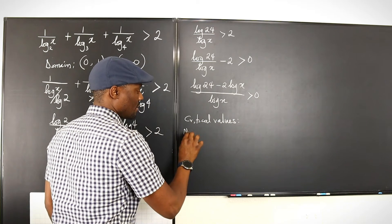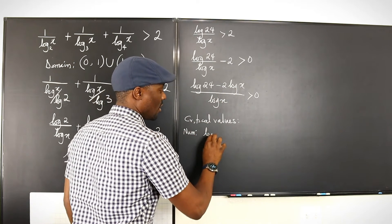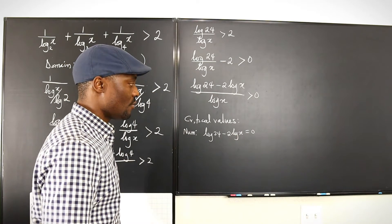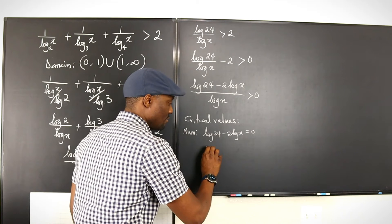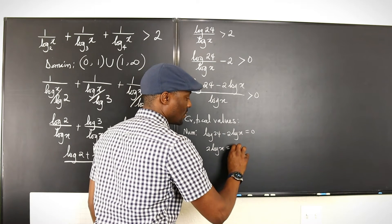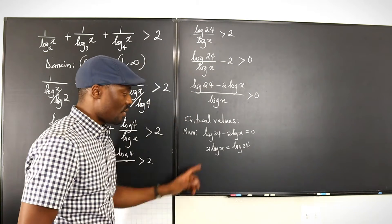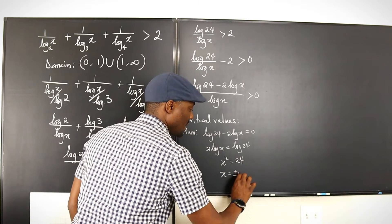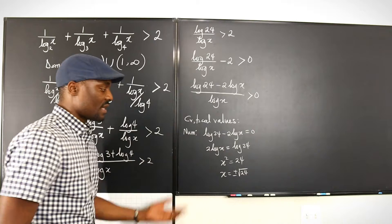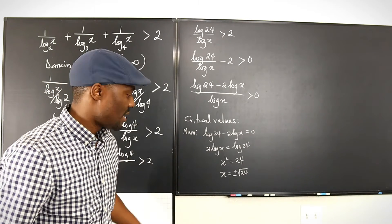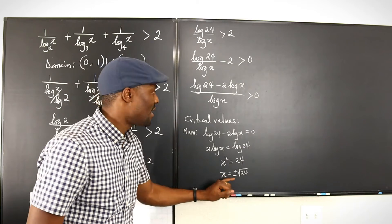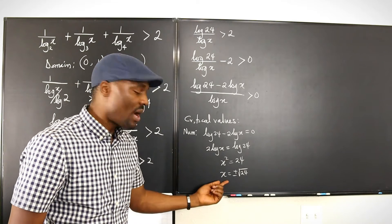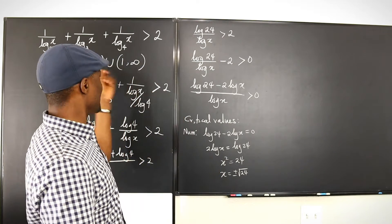Let's get our critical values. For the numerator, we're going to have log 24 minus 2 log x equals zero. We equate both to zero and then we're going to have 2 log x equals log 24. Let's take these two back up there. We're going to see that x squared equals 24 and then x will be equal to plus or minus square root of 24. And that's where we stop. But remember, x cannot be negative because we already said it. The domain of this function is such that x cannot be negative.